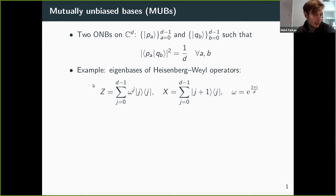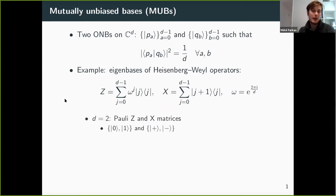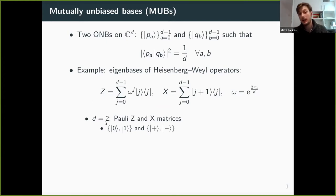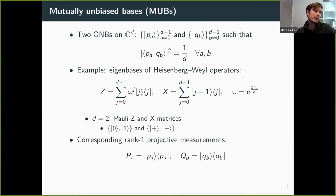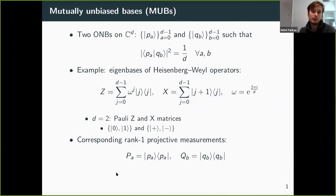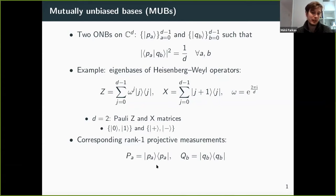If you're not familiar with those, you almost surely know the two-dimensional example, which is simply the Pauli Z and X matrices and their corresponding eigenbases — the computational basis and the Hadamard basis, the plus-minus vectors. These two bases form a pair of MUBs in dimension two. For every such basis there's a corresponding rank-one projective measurement. In this talk I'll call these measurements MUBs as well — I won't really distinguish between bases and rank-one projective measurements.